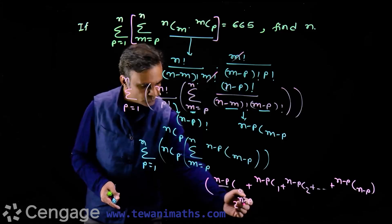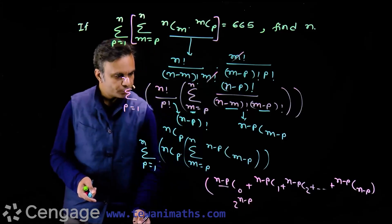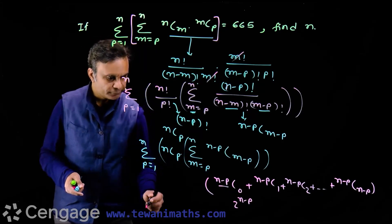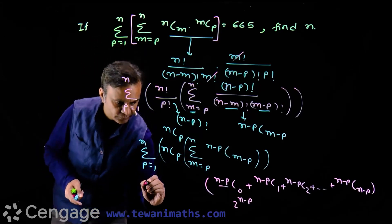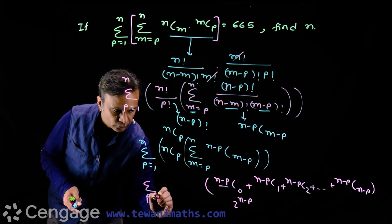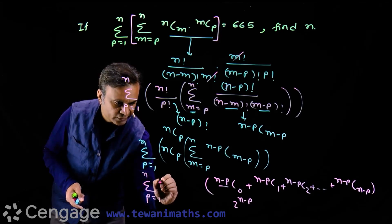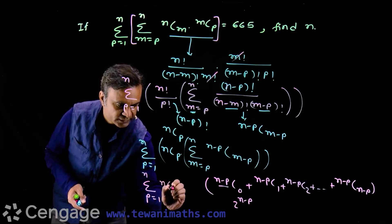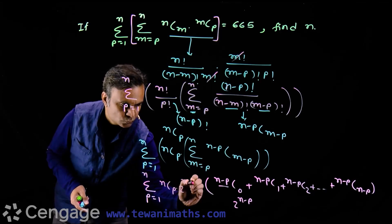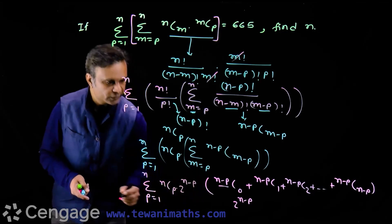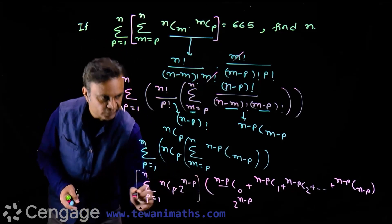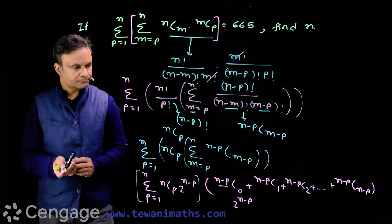So the inner sigma sum is 2 power (n minus p). Now we have sigma for p equal to 1 to n of nCp multiplied by 2 power (n minus p). We now need to evaluate this outer sigma.